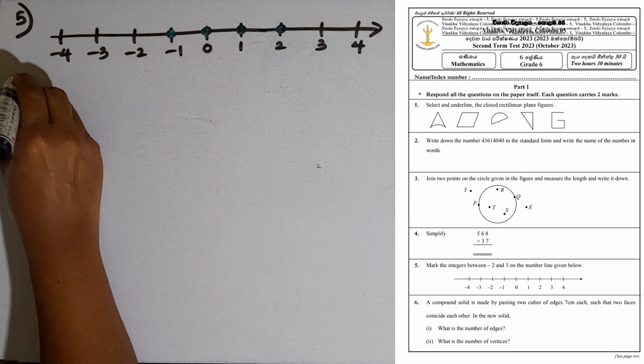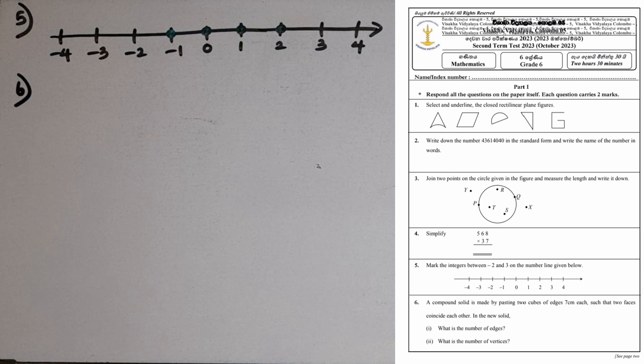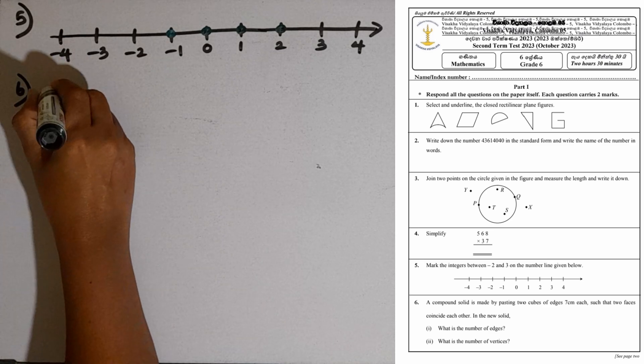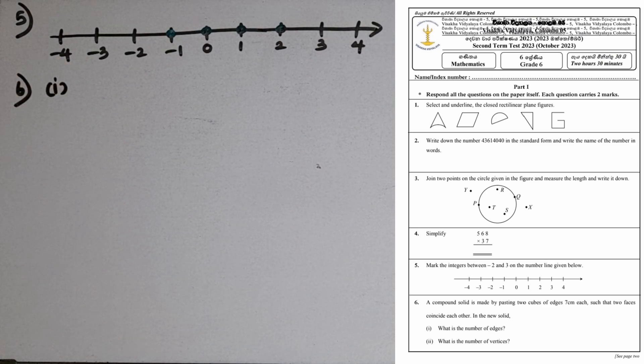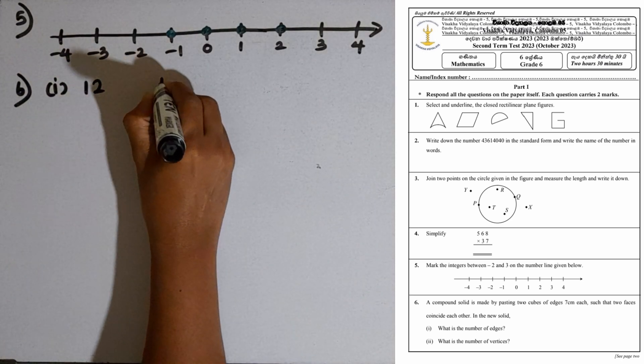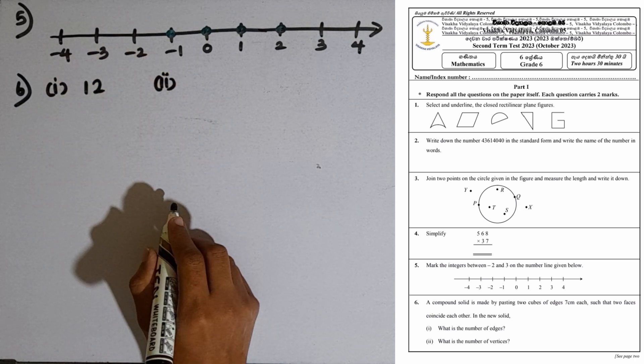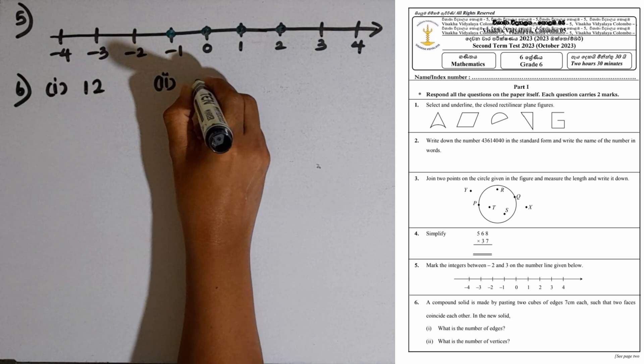Question number six: A compound solid is made by pasting two cubes of edges 7 cm each, such that two faces coincide with each other. In the new solid, by pasting two identical cubes, we can form a cuboid. First question: What is the number of edges? In a cuboid we have 12 edges. Second part: What is the number of vertices? In a cuboid we have 8 vertices.